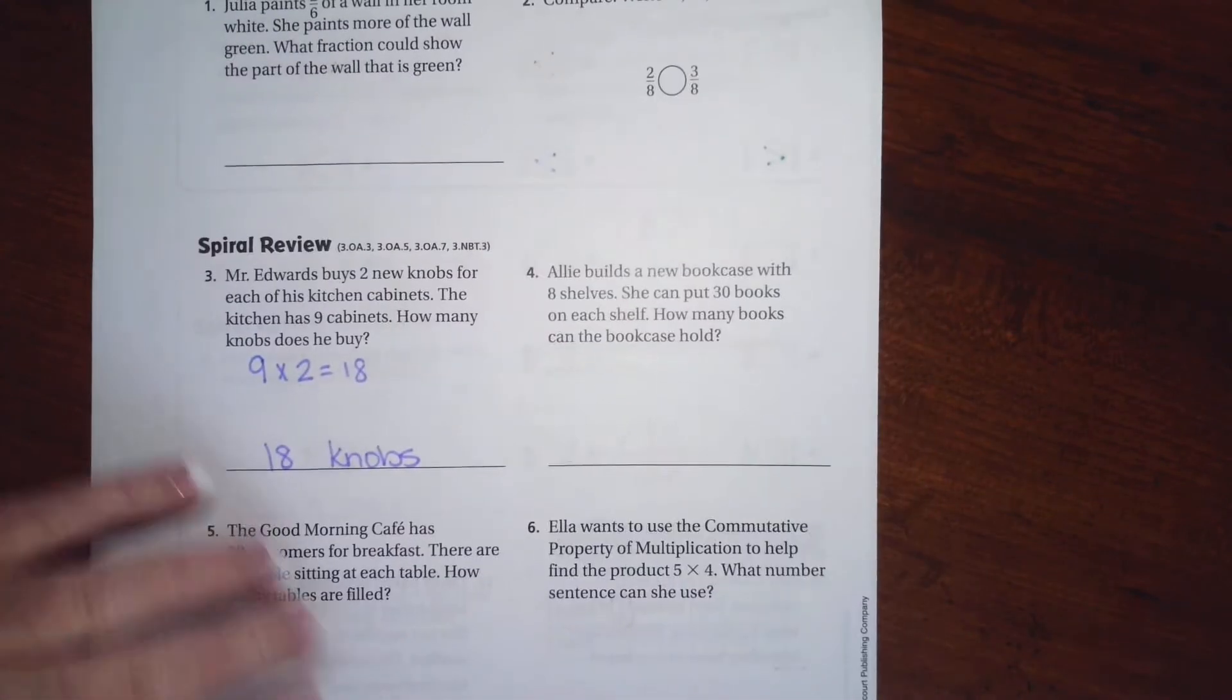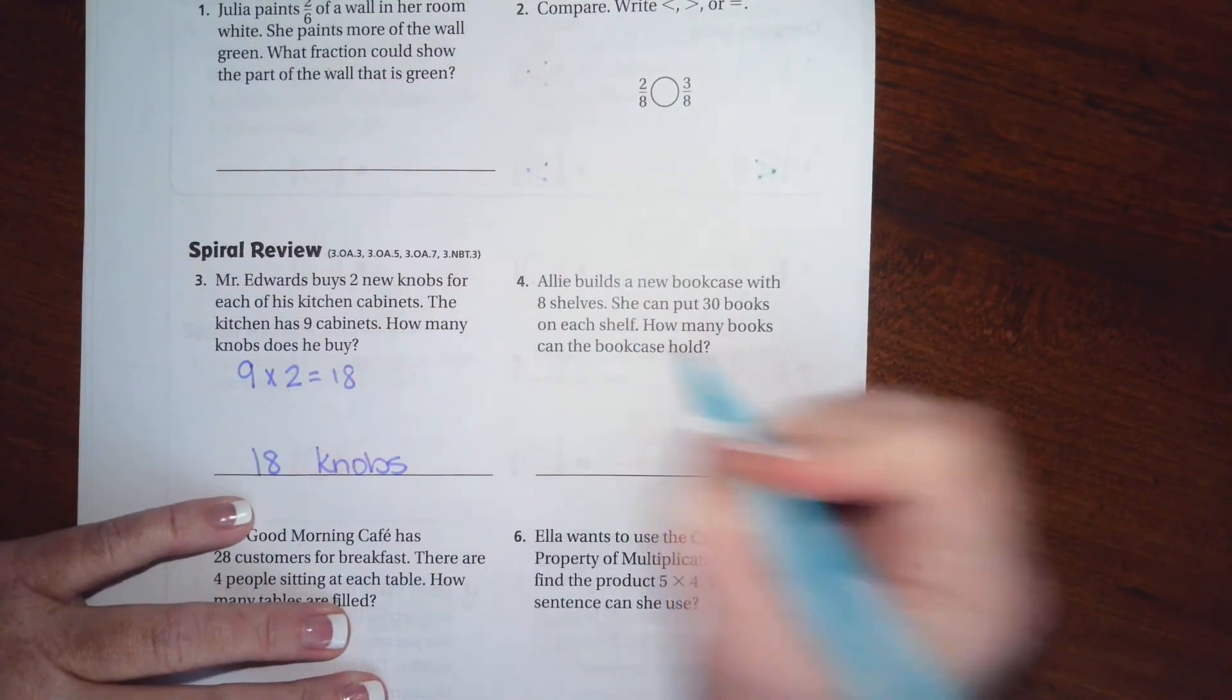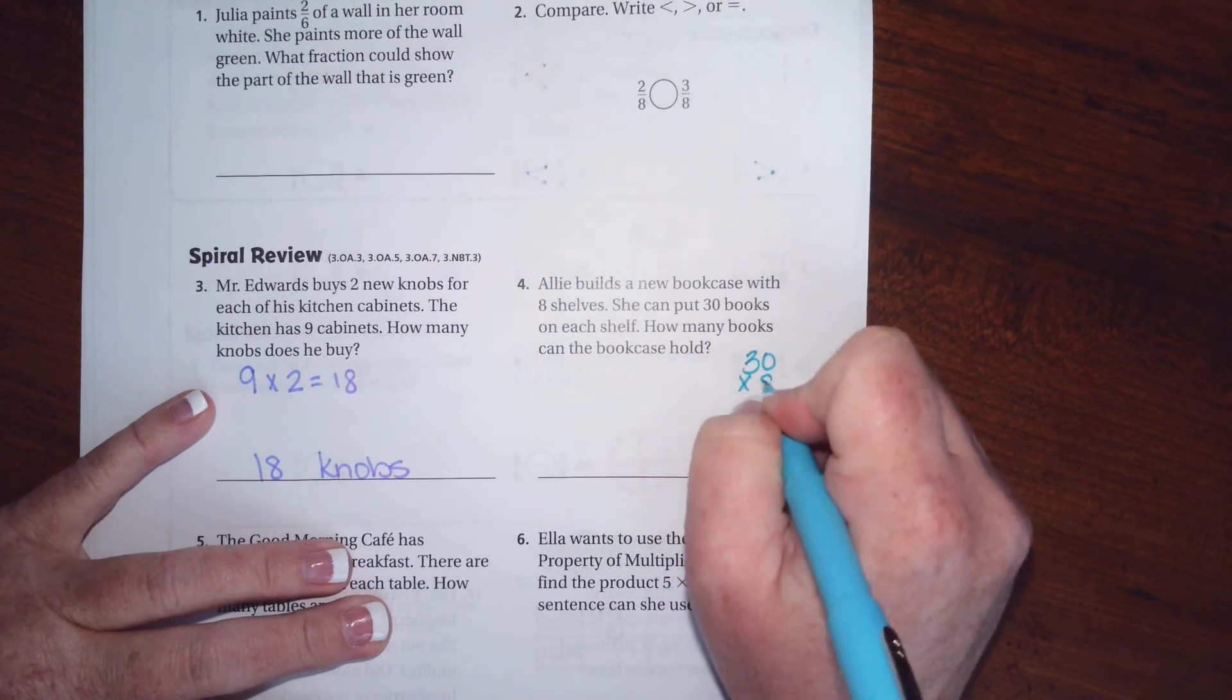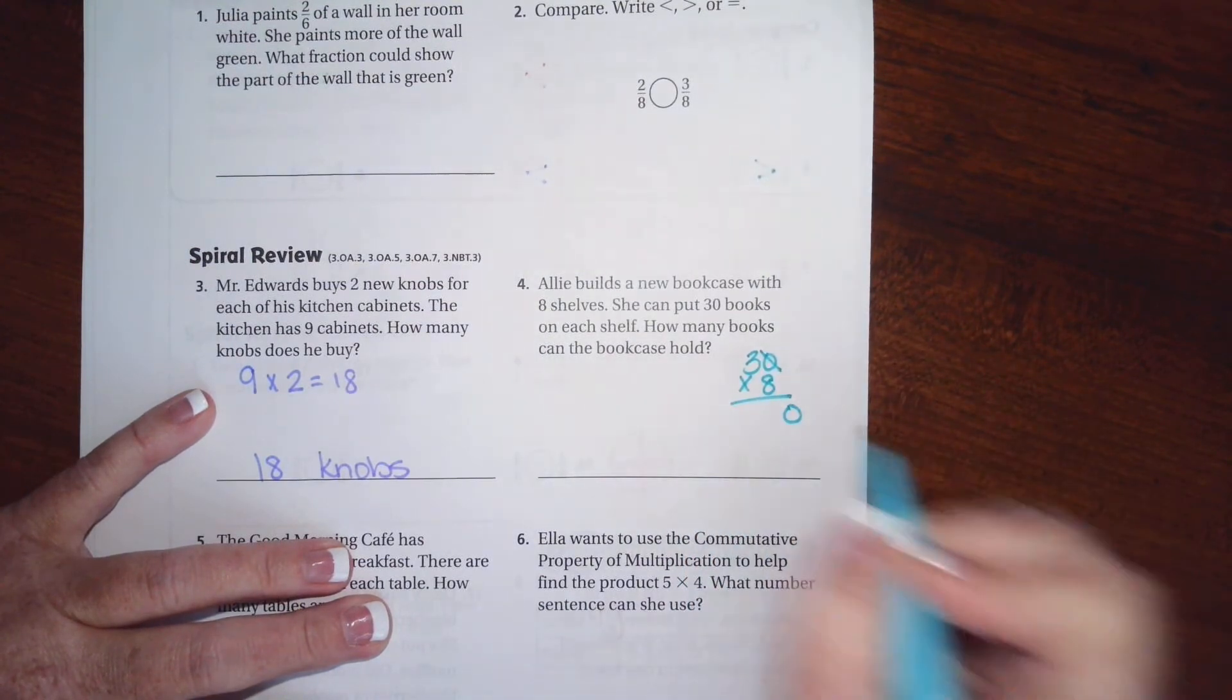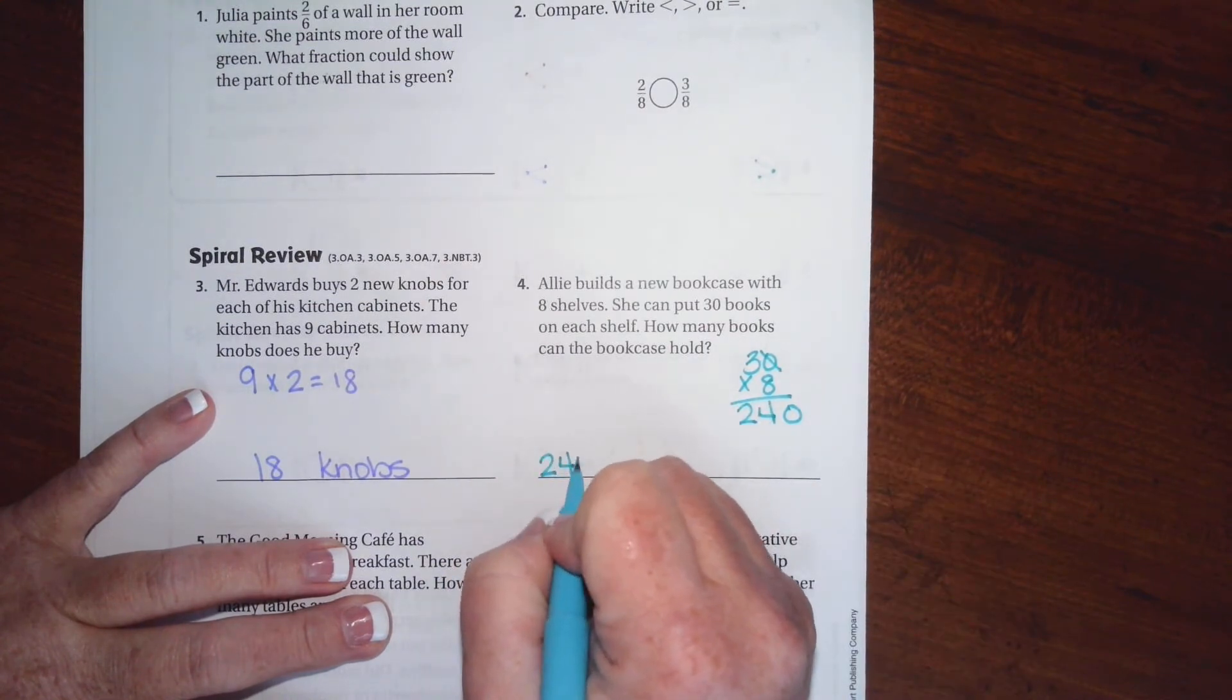All right, Ali builds a new bookcase with eight shelves. She can put 30 books on each shelf. How many books can the bookcase hold? Well, 30 times eight. I'm going to take that zero off, I'm going to put it at the end, and eight times three is 24. So 240 books.